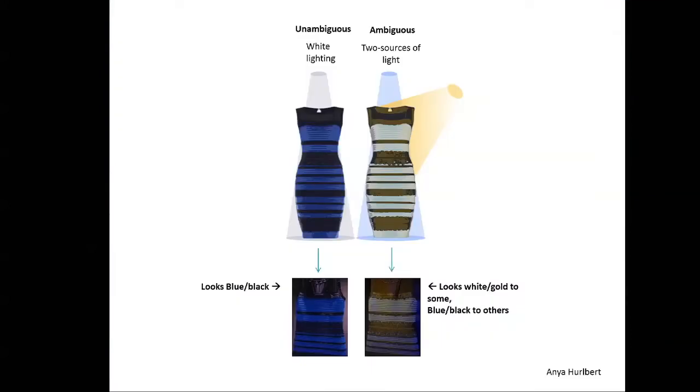Now, if we take the actual dress, which is, by the way, actually blue and black under white light, it's unambiguously so. But if we put it under blue light from the sky as well as sunlight from the sky, what happens here is that half of the people see it blue and black and half of the people see it white and gold, depending on whether you're sun people or blue sky people, dog people or cat people. I don't have any idea. But that's what's happening. Thank you very much.